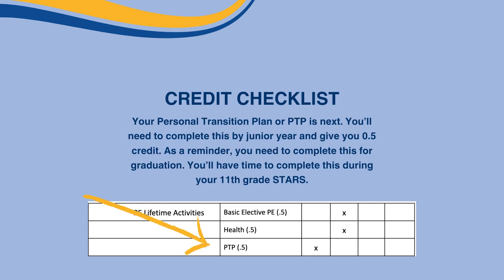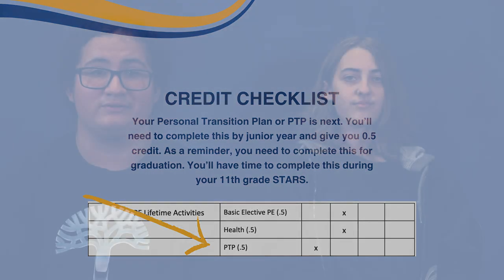Your personal transition plan, or PTP, is next. You'll need to complete this by your junior year, and it gives you half a credit. As a reminder, you need to complete this for graduation. You'll have time to complete this during your 11th grade STARS.